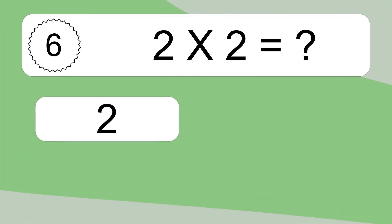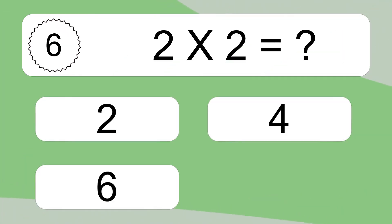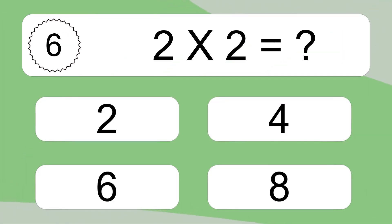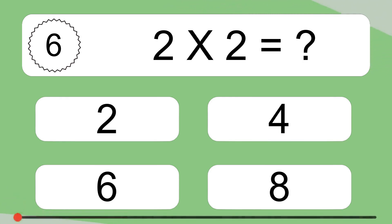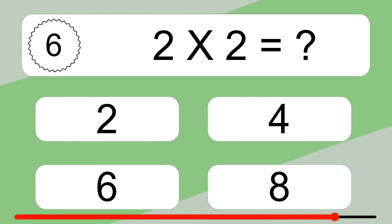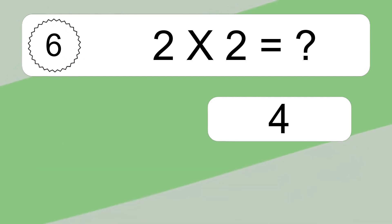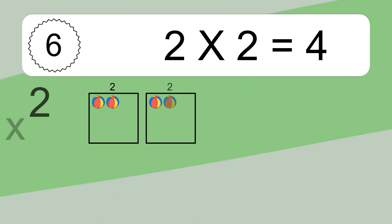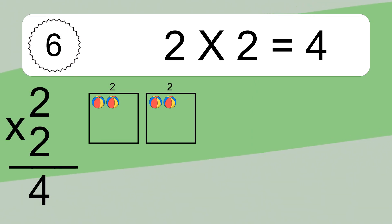2 times 2 equals what? 2 times 2 equals 4.